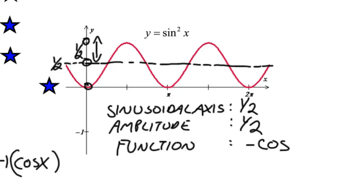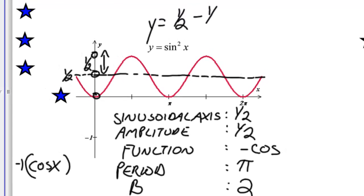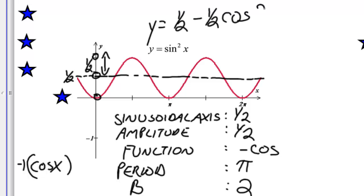And, since our period is pi again, our b value will be 2, 2 pi over pi. To write this particular image with a general sinusoidal equation, we would say y equals our sinusoidal axis of 1 half minus 1 half cosine of 2x. Because we've flipped the behavior of the cosine, it has an amplitude of 1 half and a period of pi. And our b value is 2 pi over pi.